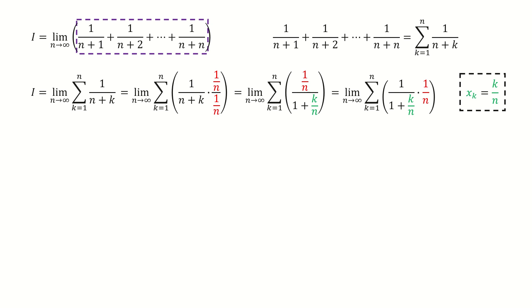Here we define x_k equals to k over n. So this equation can be written into this form.